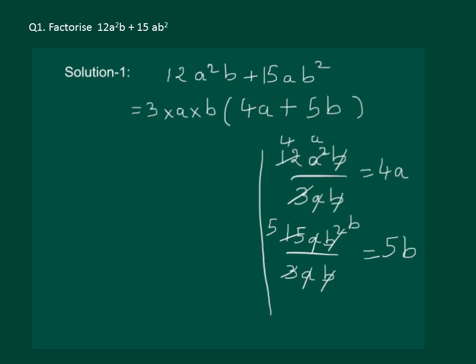Since these factors are not further reducible, hence 3ab into 4a plus 5b is the required answer.